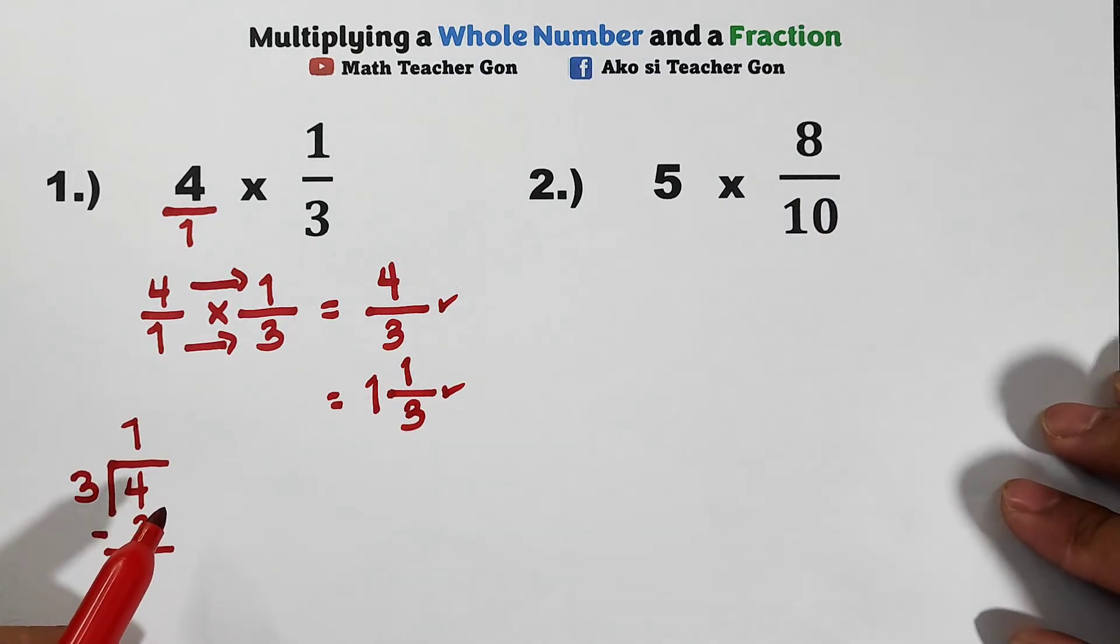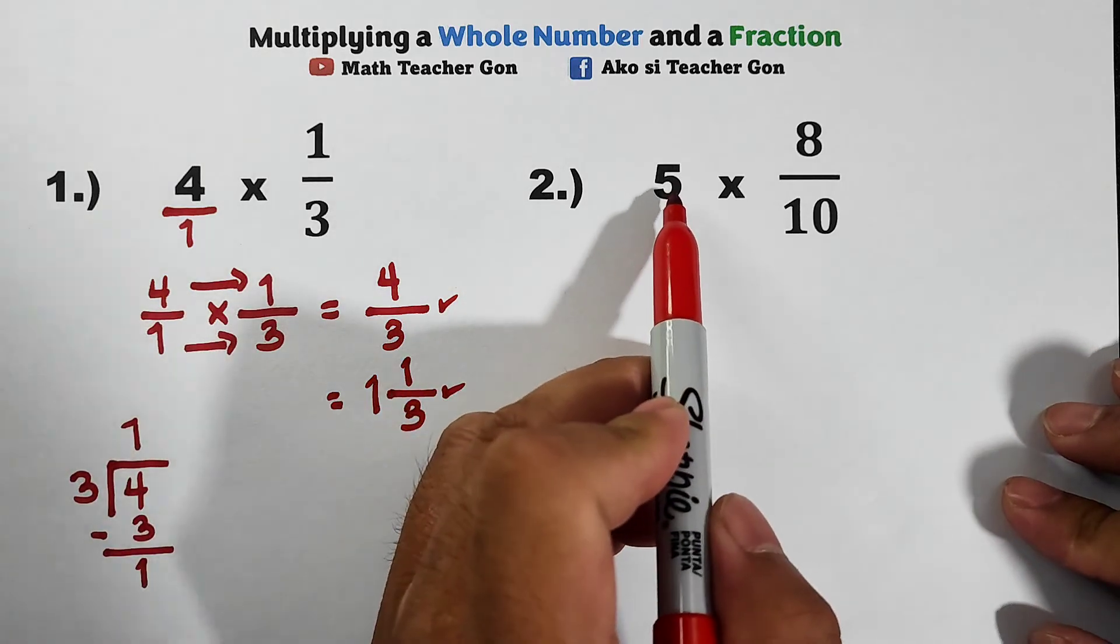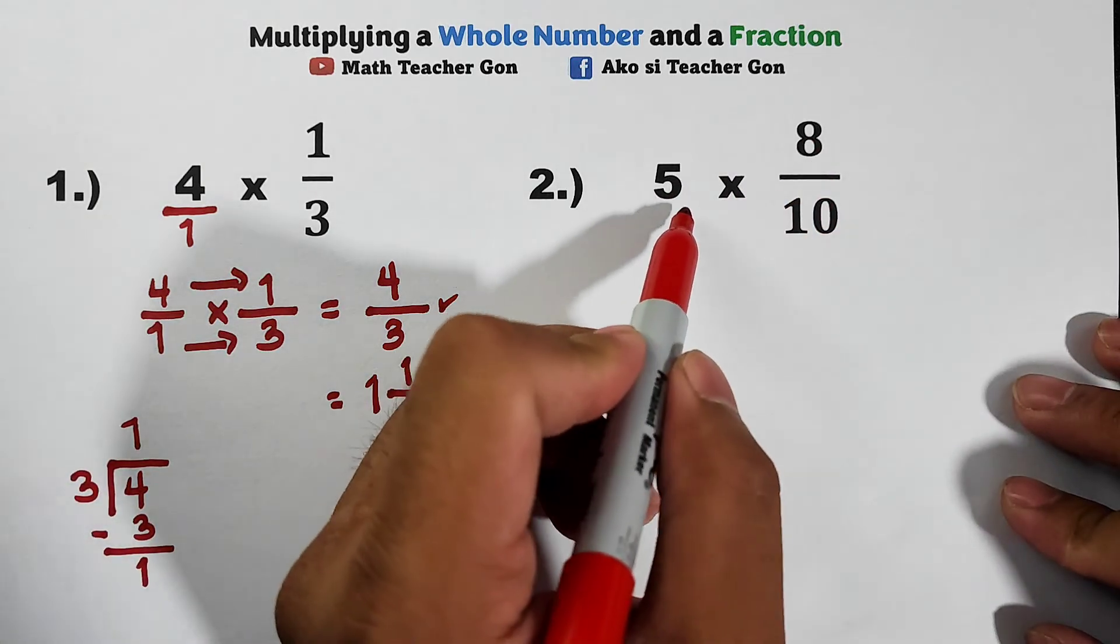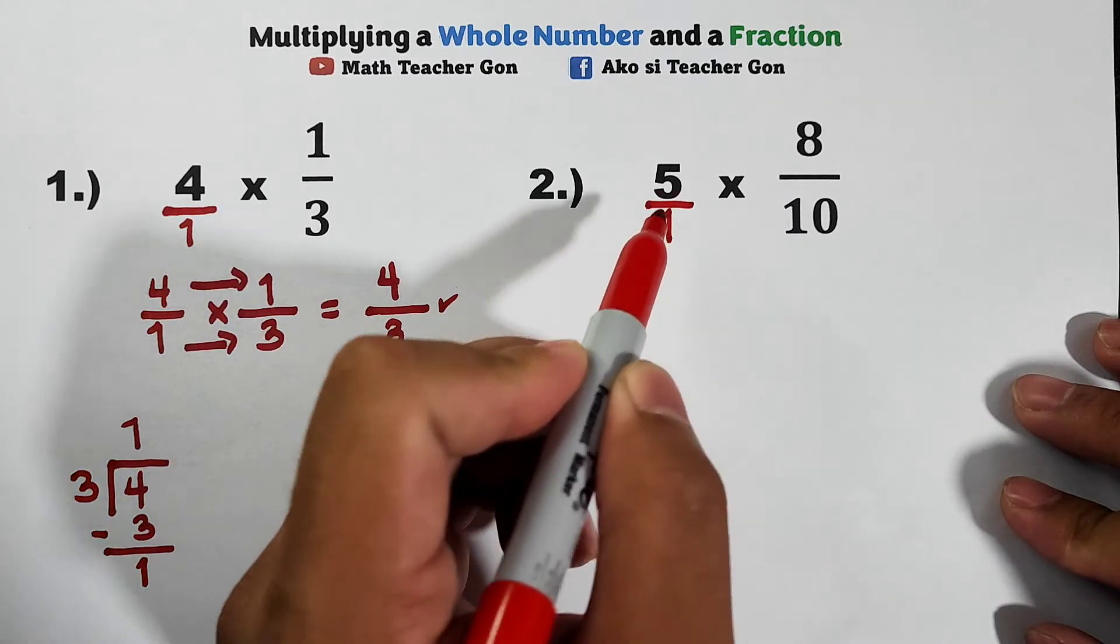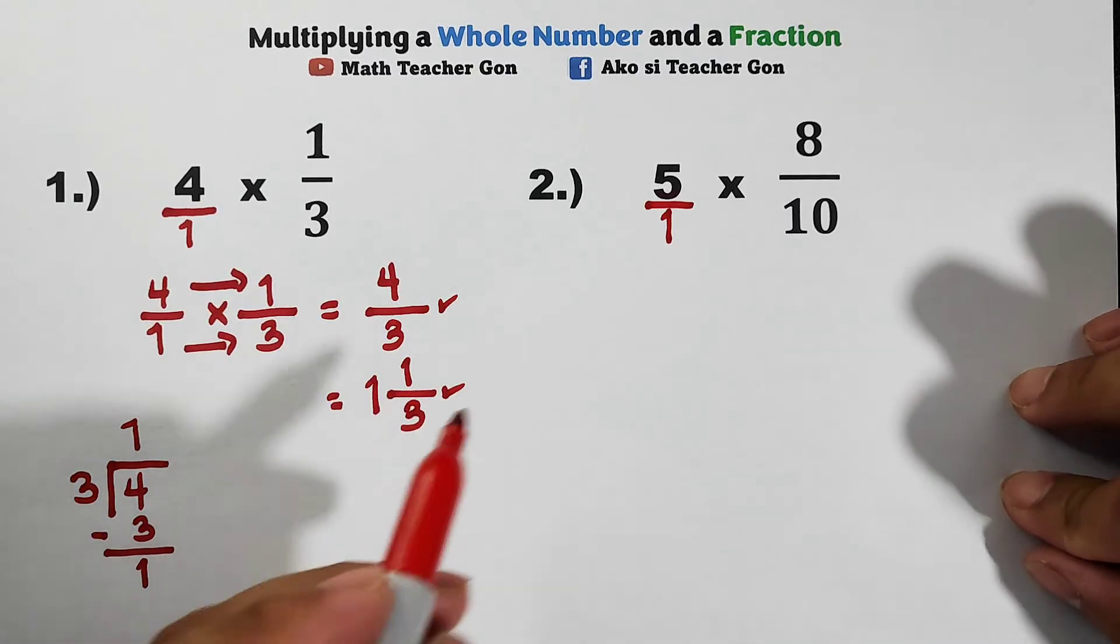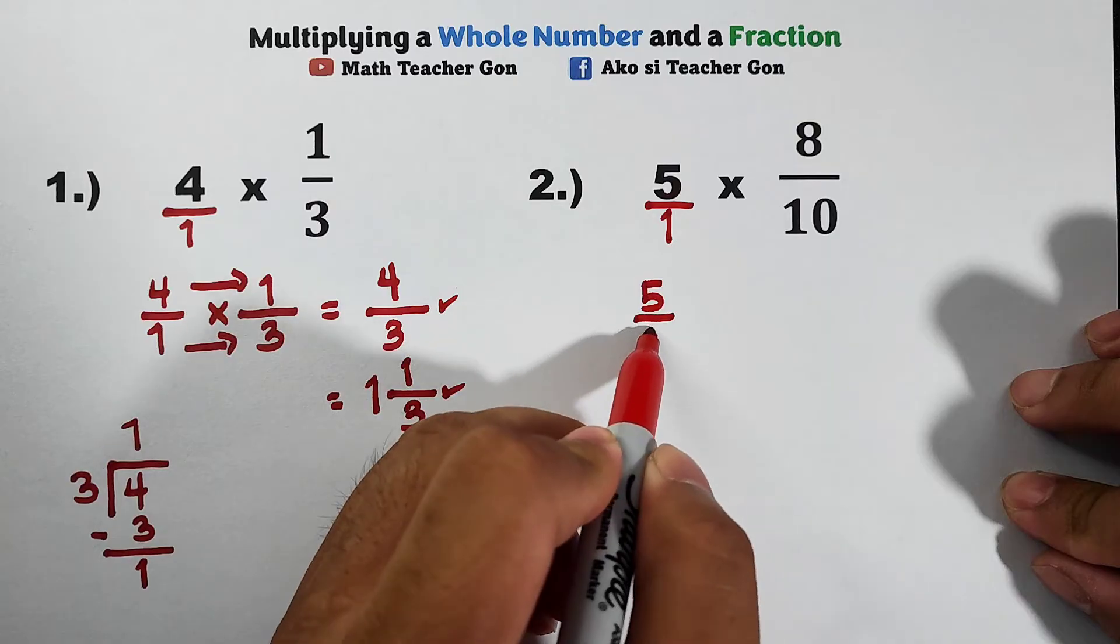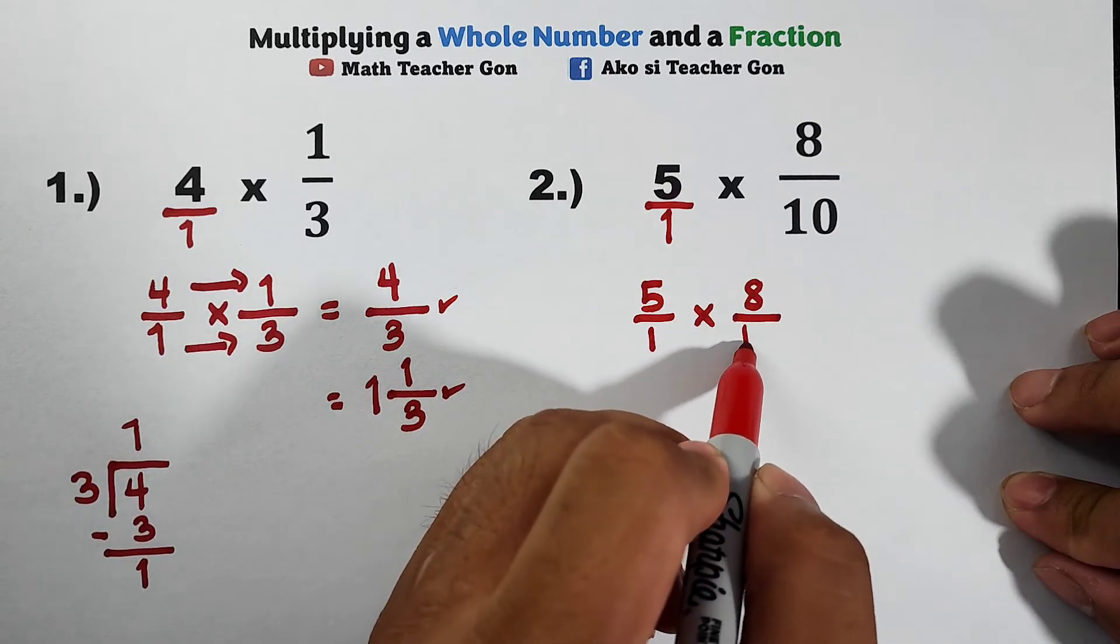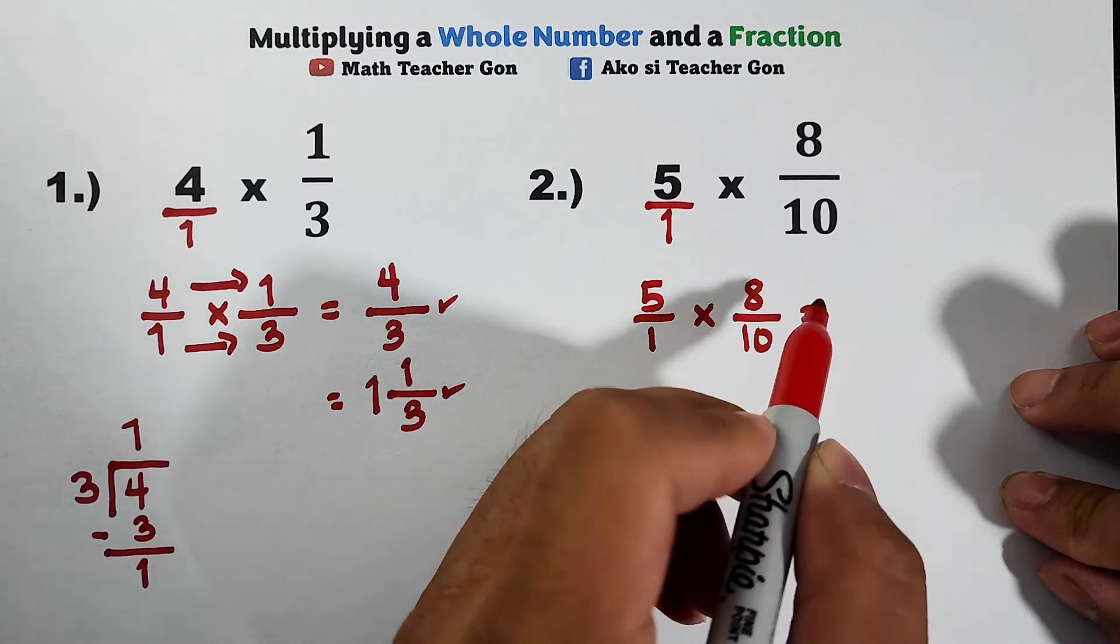Now let's continue with number two. In number two we are given 5 times 8/10. First step: put 1 in your denominator, so you have 5/1 times 8/10. Let's multiply.